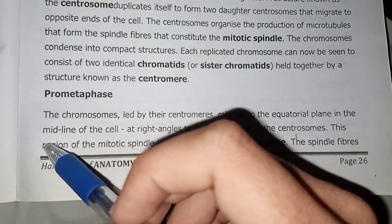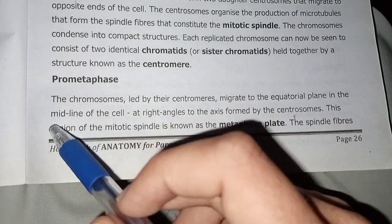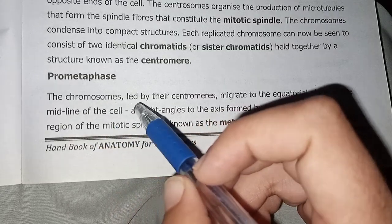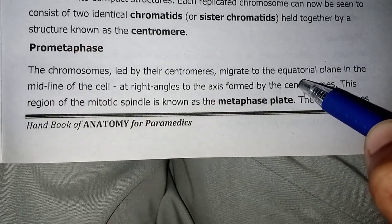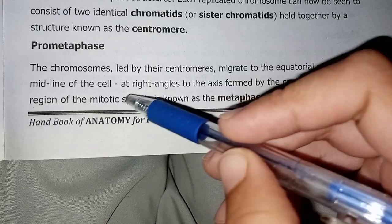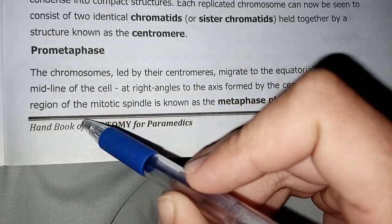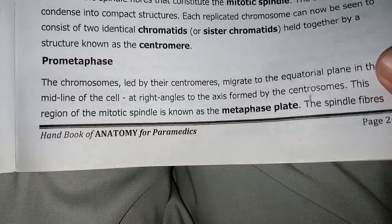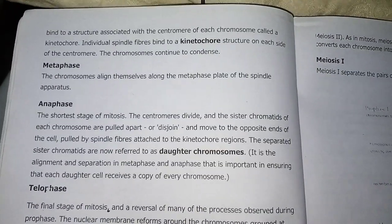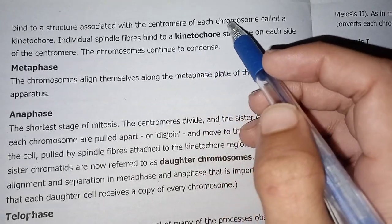The second stage of mitosis is prometaphase. The chromosomes, led by their centromeres, migrate to the equatorial plane in the midline of the cell at right angles to the axis formed by the centrosomes. This region of the mitotic spindle is known as the metaphase plate. The spindle fibers bind to a structure associated with the centromere of each chromosome called the kinetochore.